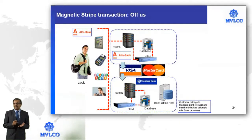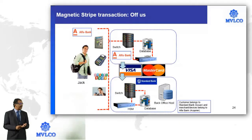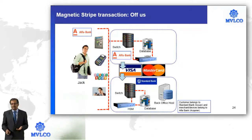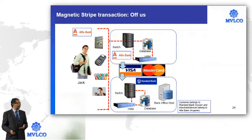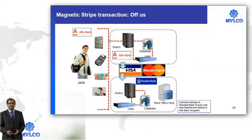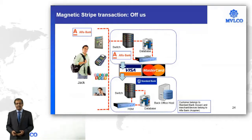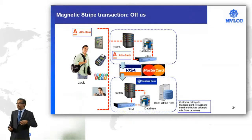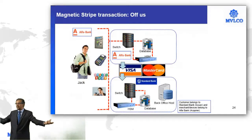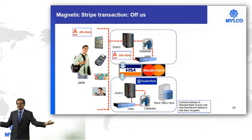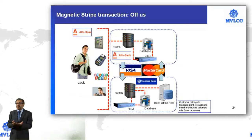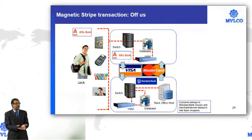Standard Bank authenticates Jack and his card, looks at the balance available, and once all validations are completed, approves or denies the transaction. They communicate that result to the network; the network communicates it back to the acquiring bank, Alpha. If the transaction is approved, Alpha will do the accounting — they note that their ATM is dispensing $500 and needs to collect that $500 from the issuing bank, Standard Bank. Once this accounting is done, they give that information to the ATM, which dispenses $500 of cash.